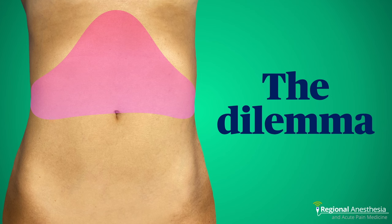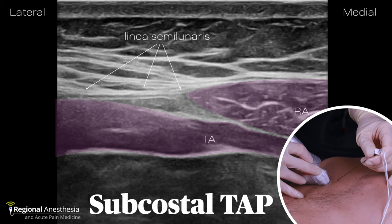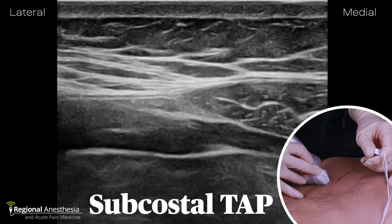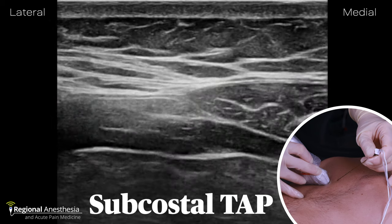As our understanding of truncal innervation gets more refined, we've been able to come up with a number of solutions for various patterns of incisional pain. One thing that's become clear is the TAP block is great for lower abdominal incisions, but just doesn't cut the mustard above the umbilicus. There are several fascial plane block approaches for tackling this area.